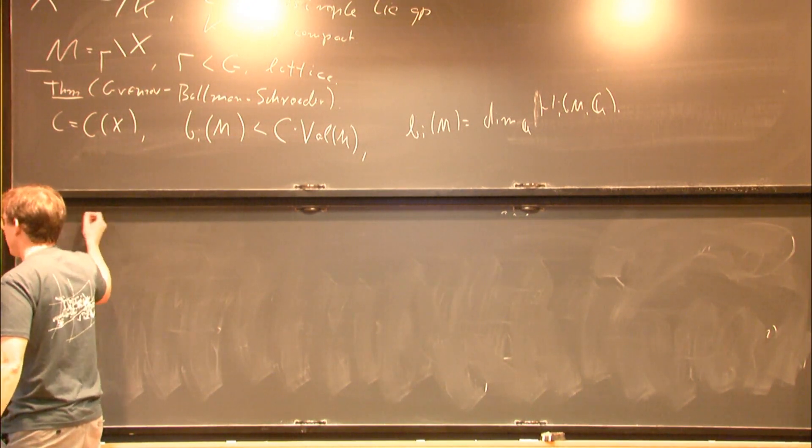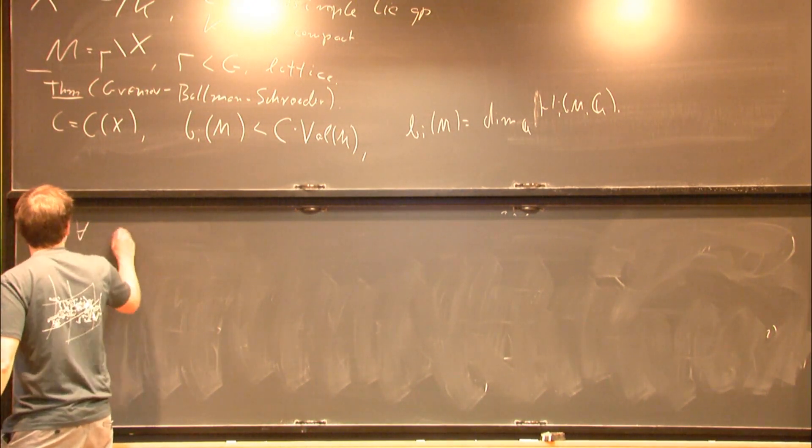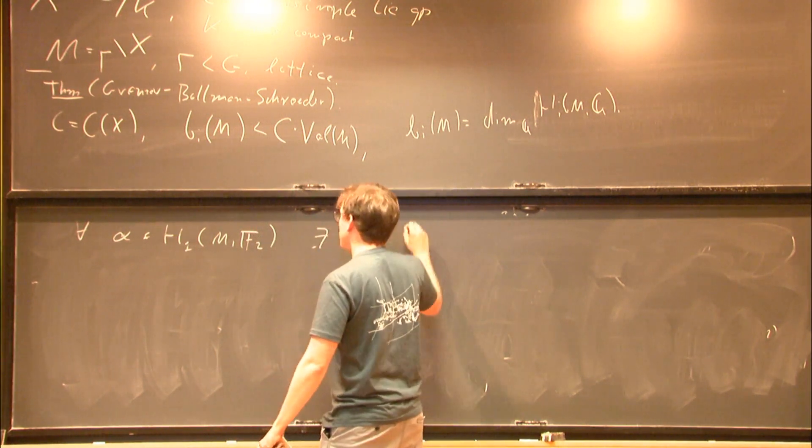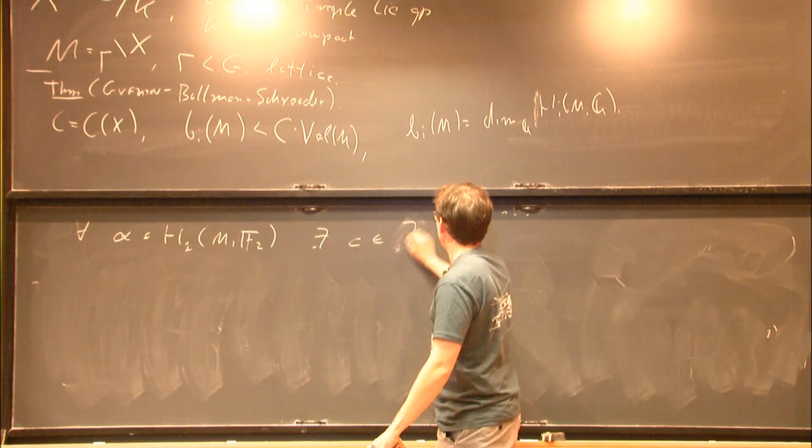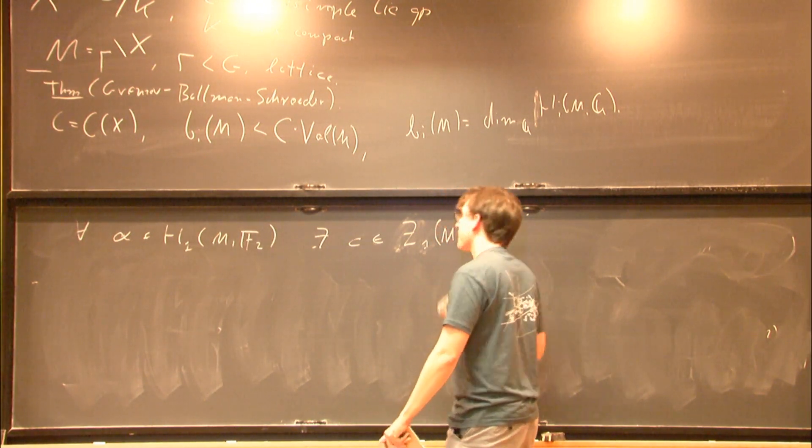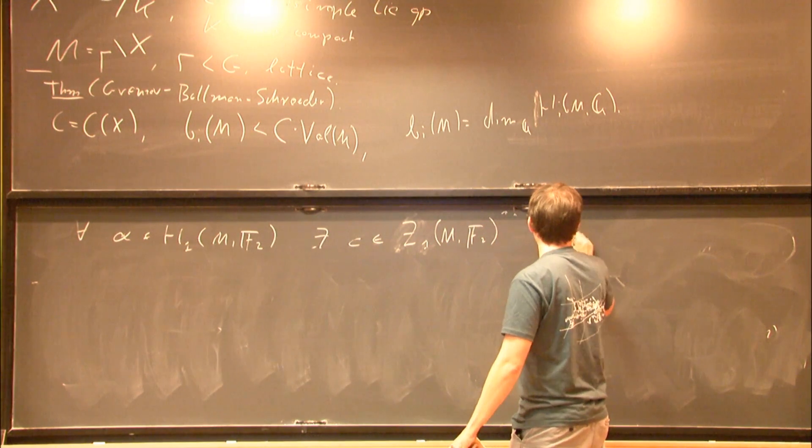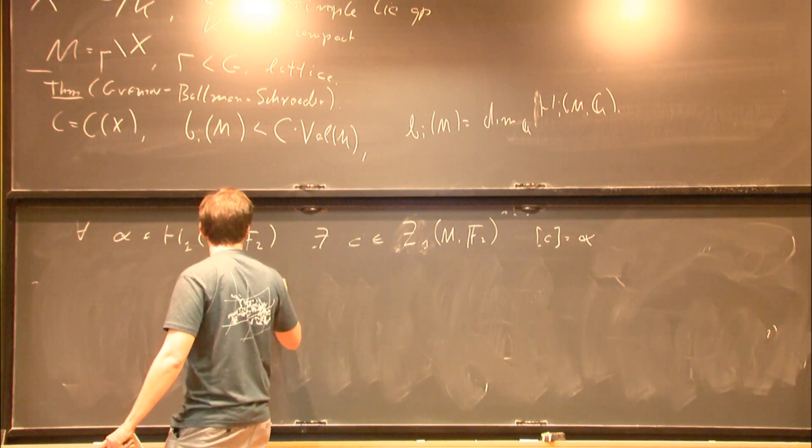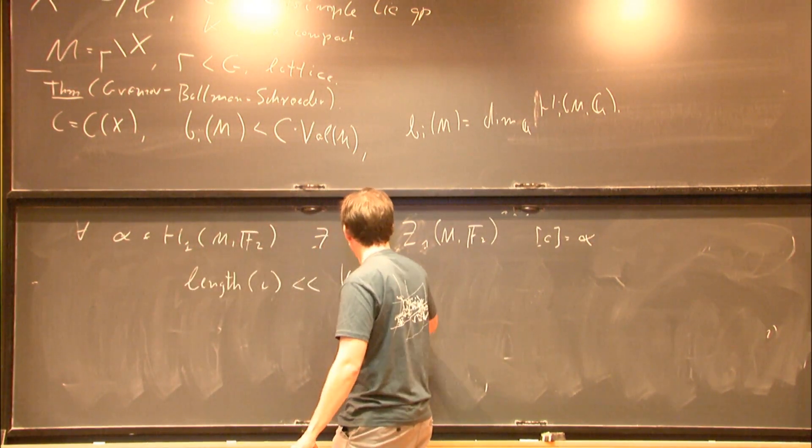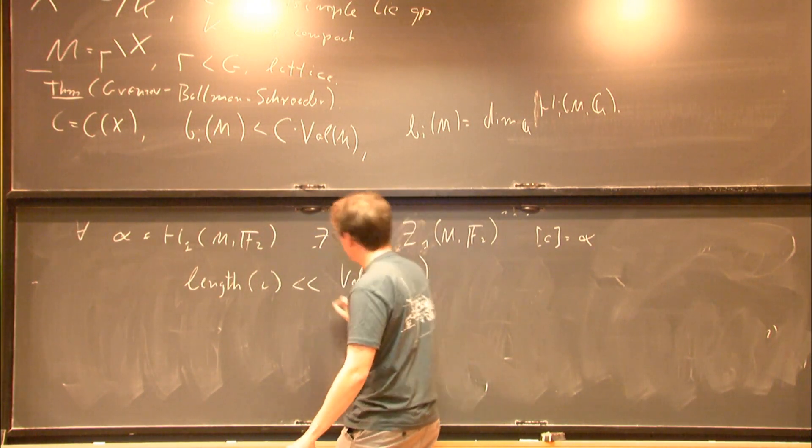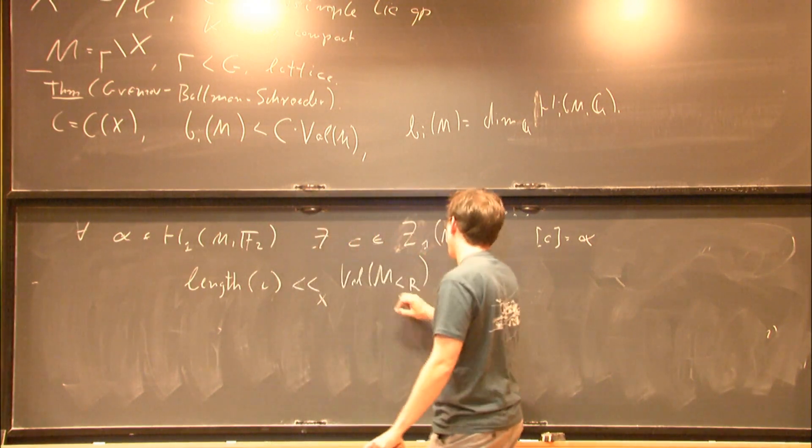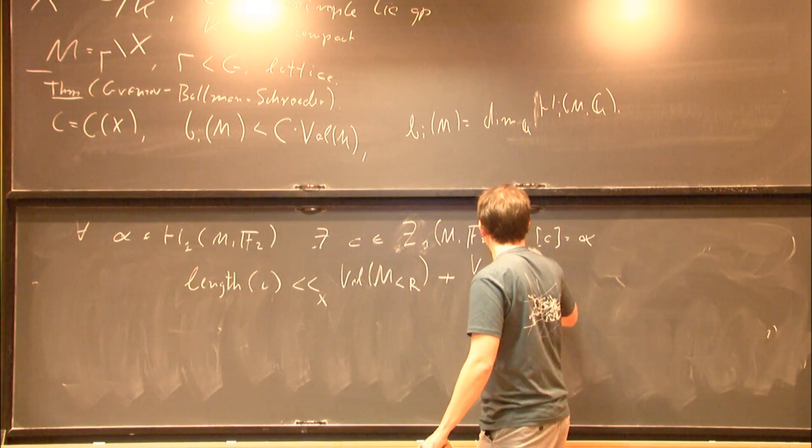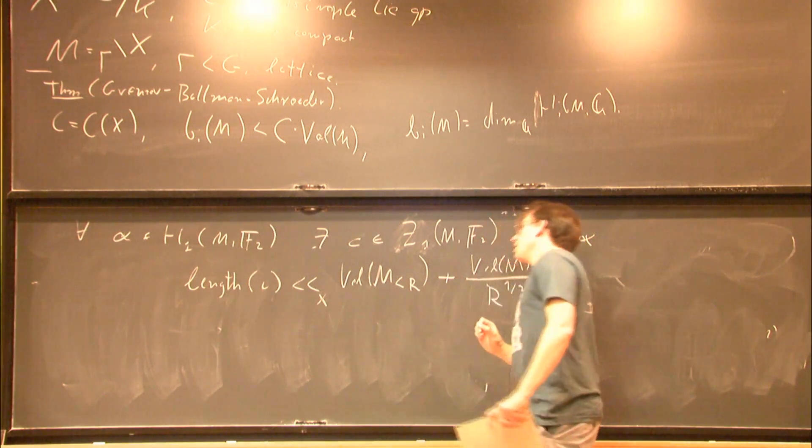This is a corollary of the following. For every alpha in H_1(M,F2), there exists a cycle. For example, we imagine this is just a bunch of closed curves with coefficients in F2, such that alpha is represented by C, and length of C is smaller up to a constant than volume of the thin part. This constant depends on just X. Volume of R thin part plus volume of M divided by R to the power one half.